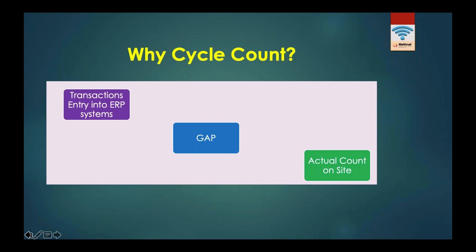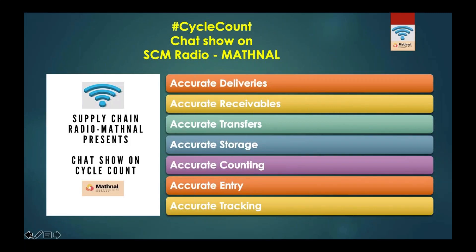The transactions where mismatches or errors happen are the ones cycle count reveals gaps in. For example, if you don't do accurate deliveries, there will be a gap between system inventory and actual inventory. Similarly, if you are not doing proper, accurate receivables, there will be a gap. If you are transferring stock from one location to another and not doing proper accurate transfers, a gap will occur.